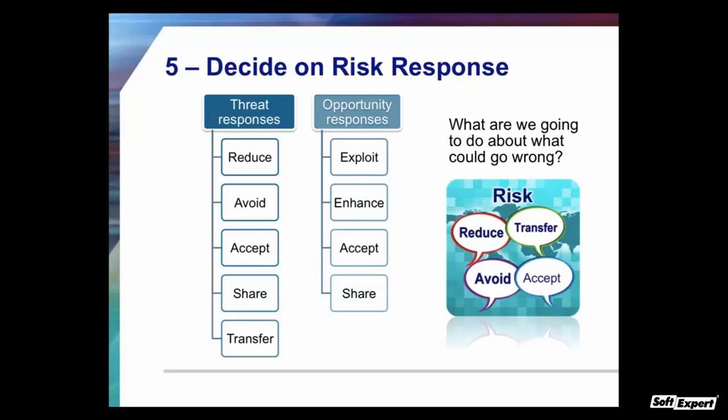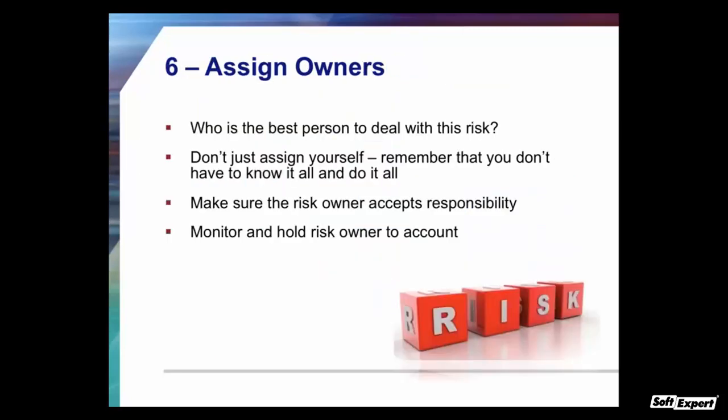The sixth step is to assign owners, now that you've decided what to do about each risk. This is where many project managers go wrong — they simply assign themselves to all the risks. But you must assign the right owner for each risk and make sure that owner accepts responsibility. One of the best ways is making sure people are part of deciding who owns each risk — don't just decide as a project manager. Decide this in collaboration.